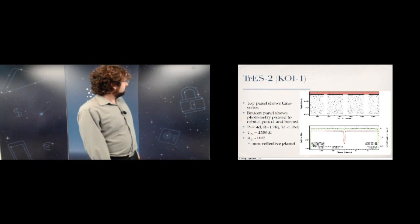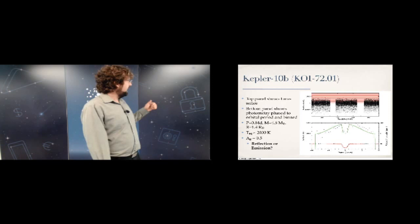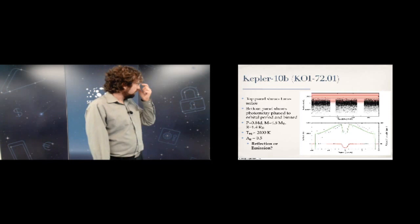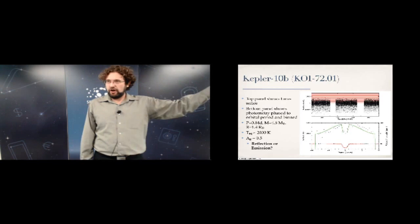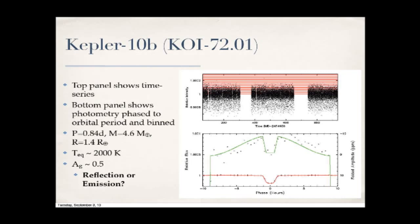Now Kepler-10b: the top right shows data spanning almost 900–1,000 days with two gaps from the same detector rotation effect, and a blur of repeated transits every 20 hours. Taking the same data, phasing it, and binning it — shown in red and green — the green curve is multiplied by a factor of 100 to show the scale: the transit is about 1,000 parts per million versus the occultation at 10 parts per million.